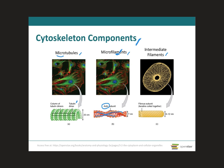Besides muscle contraction, actin also has an important role during cell division. When a cell is about to split in half, these actin filaments work with myosin to create a cleavage or groove that eventually splits the cell down the middle, forming two new cells from the original cell.